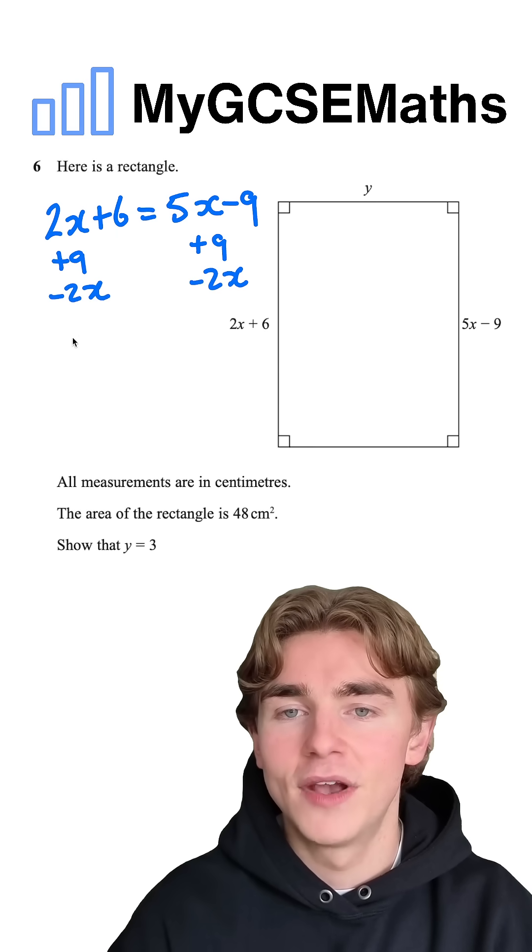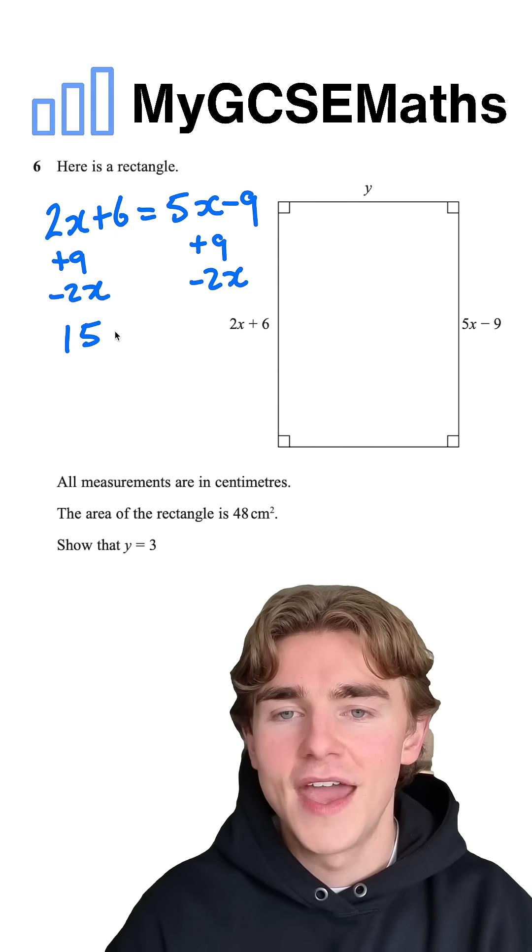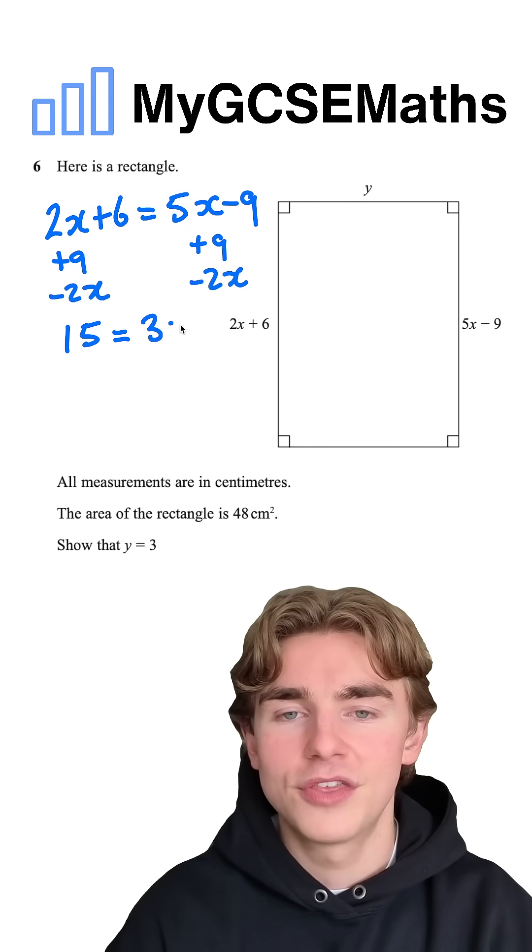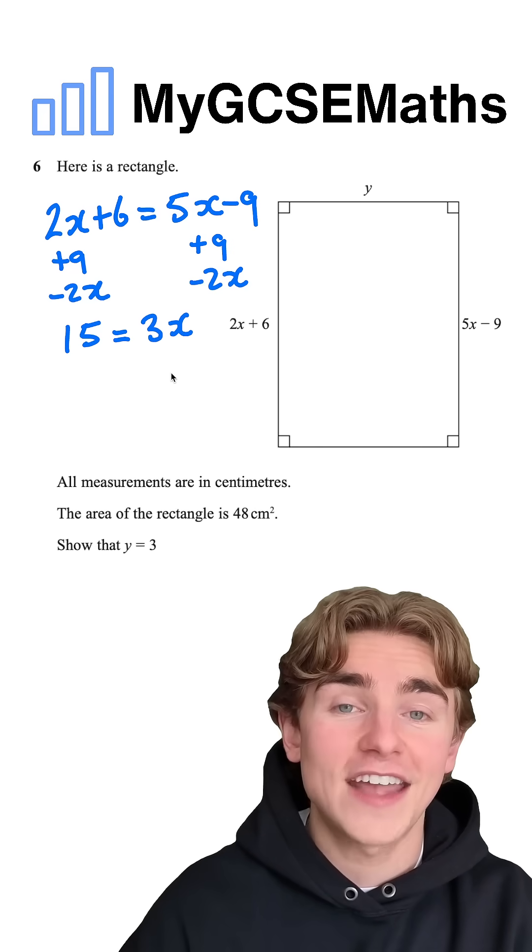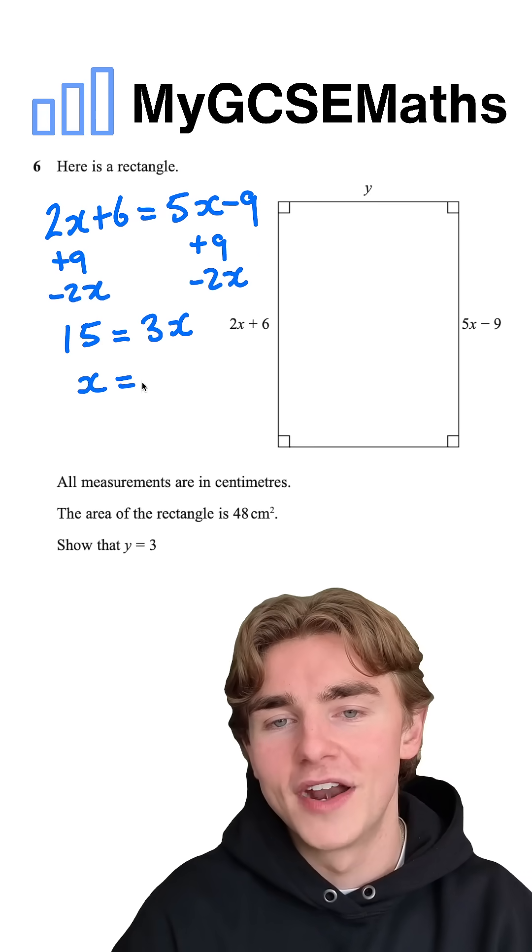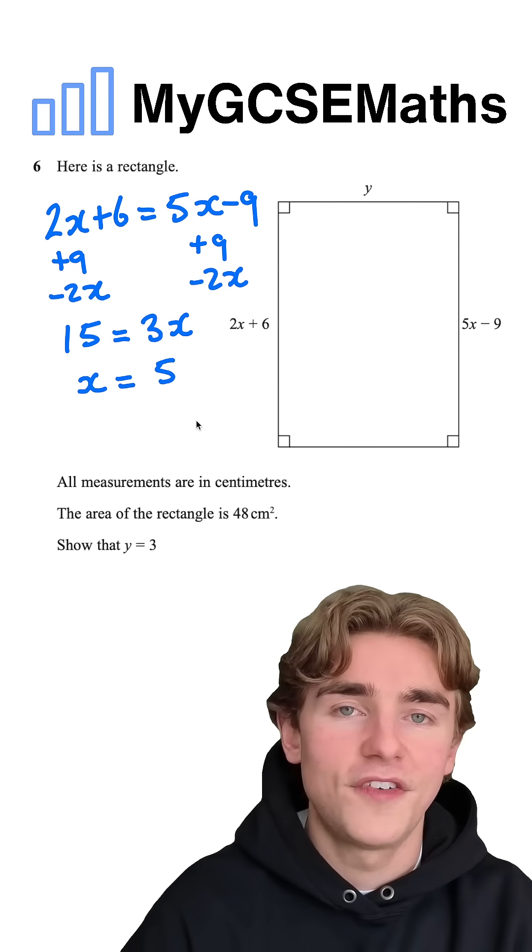Adding 9 to the left-hand side, we have 6 + 9, which is 15. Subtracting 2x from the right-hand side, we have 5x - 2x, which is 3x. Now to get the value of x, we know 3x equals 15. We can divide both sides by 3 to get x equals 5.